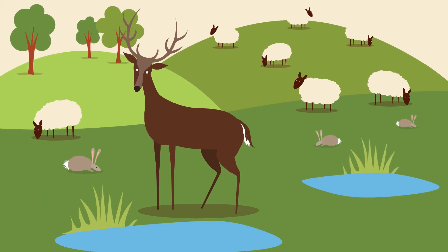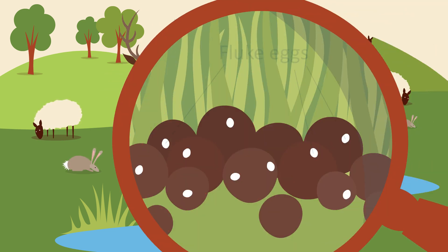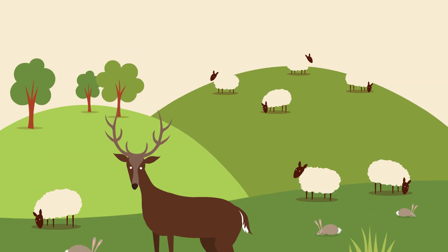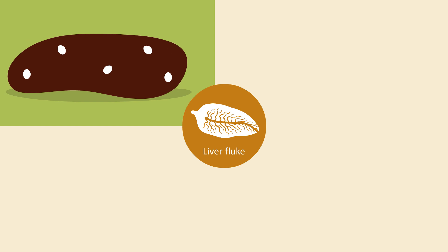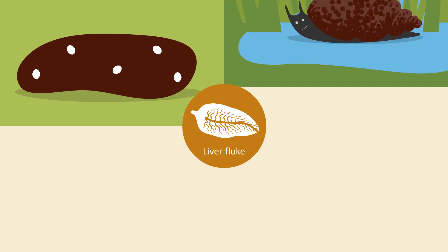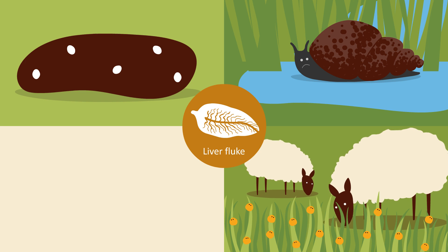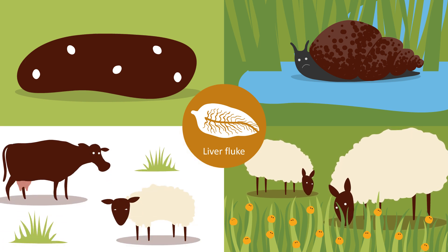Liver fluke also infects wildlife, most notably deer and rabbits, so these can keep the life cycle going in the absence of livestock, or even if the livestock have been successfully treated. There is a basic seasonality to the liver fluke life cycle, with adult fluke shedding eggs in spring, snails becoming infected in the summer, animals ingesting fluke cysts in the autumn, and showing disease and production effects in winter.